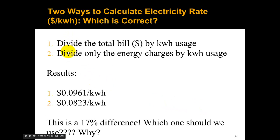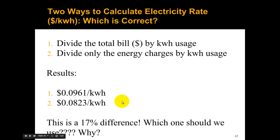So these are our results from methods one and two, and it turns out there's a 17% difference. The recommended approach is to use the lower number — 8.23 cents per kilowatt hour. This is a more conservative number and doesn't include fixed charges such as the customer charge, or power charges such as the peak kilowatt charges we saw on the bill. This way you're not making any assumptions about reducing your peak demand with your solar power.